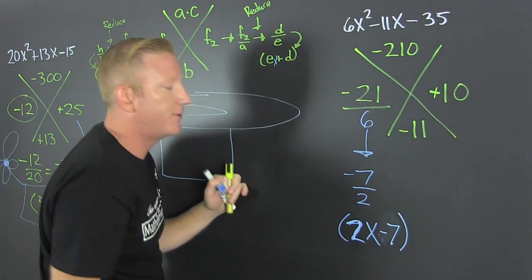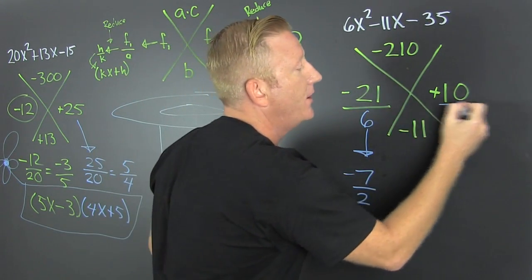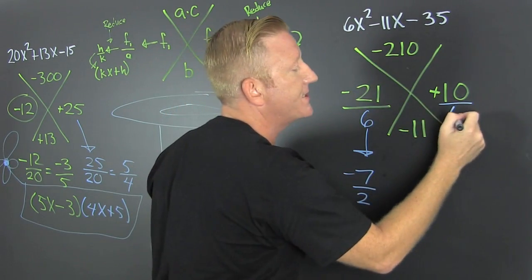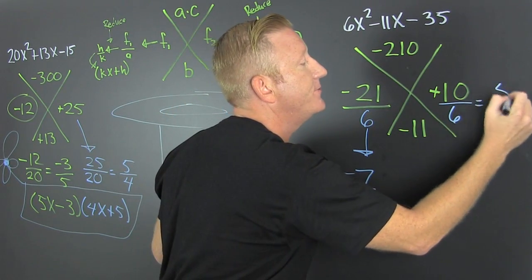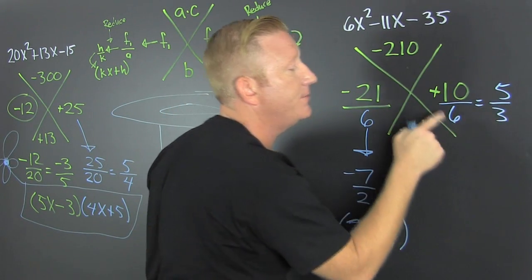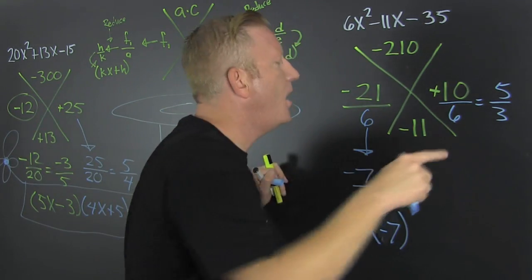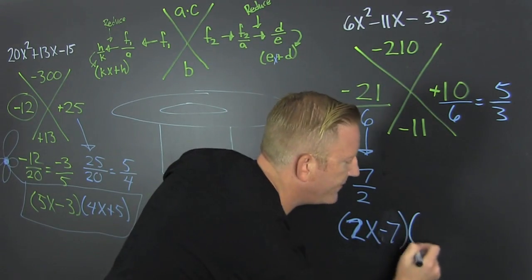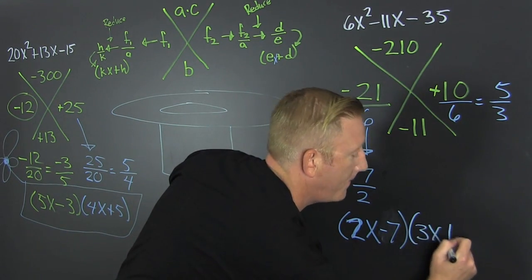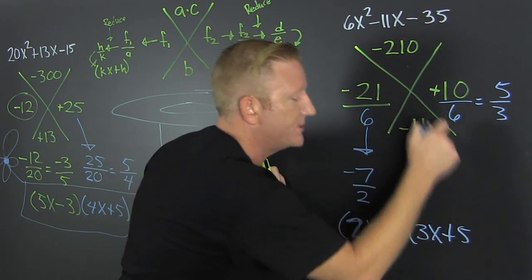So then that's a minus 7. And then this one over the leading term 6, and then that reduces to 5 over 3 because they both have a deuce. So you deduce you can reduce by a deuce. Does it look like I choked a Smurf? So then here I have a 3x plus a 5 because that was plus.